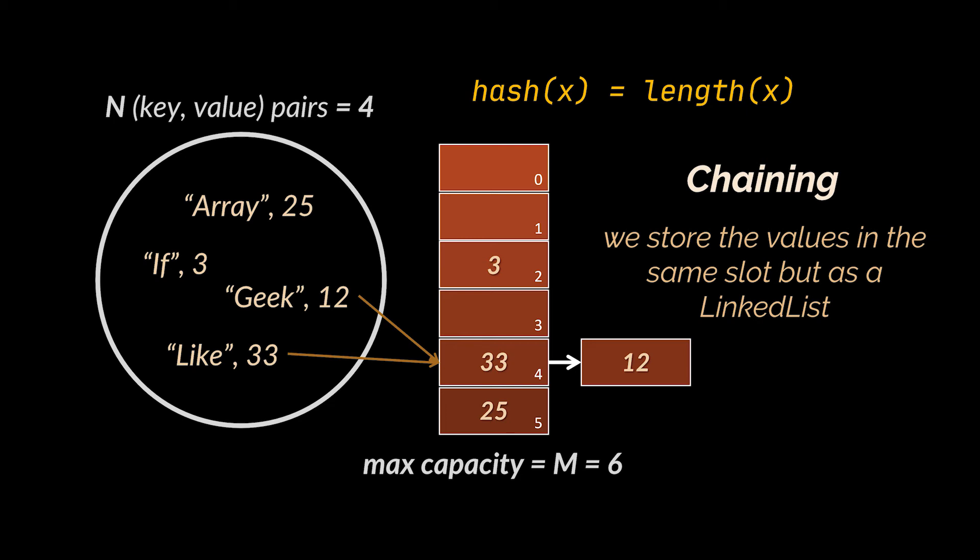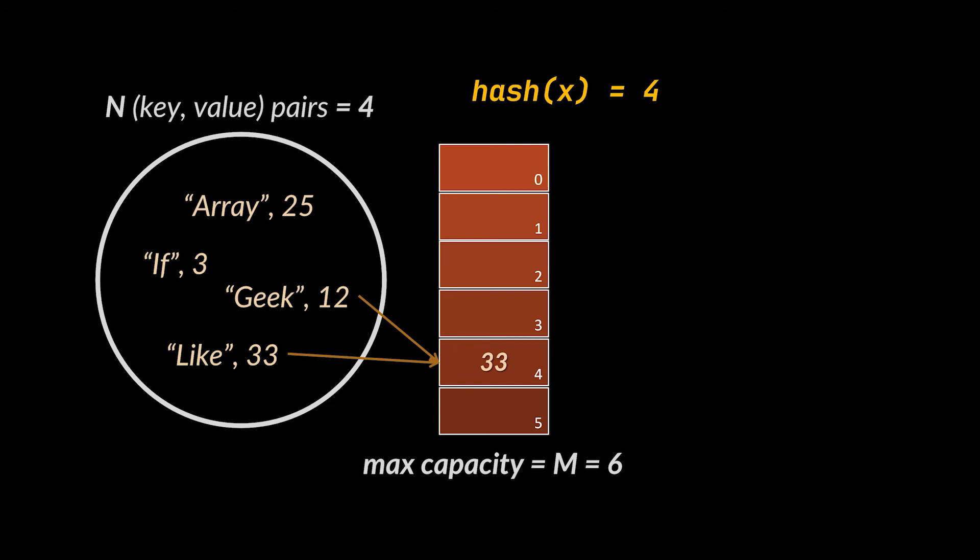Now if we replace our hashing function with this one, which is definitely the worst hashing function you can come up with, all our values will be mapped to the same slot in the array as it always returns the same index regardless of the key you are passing to it. In this case we will only have one linked list holding all the values of all our keys.